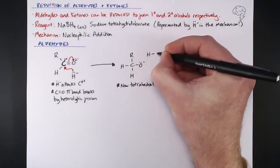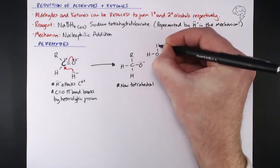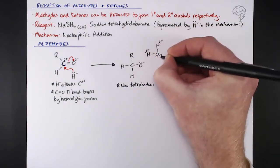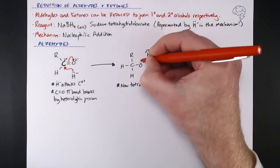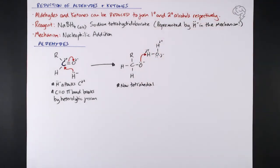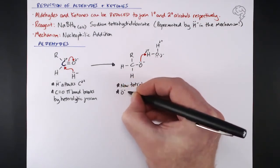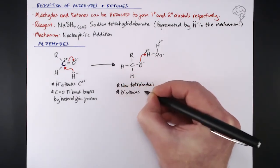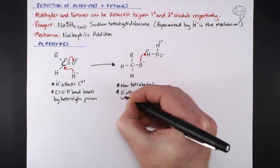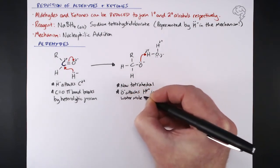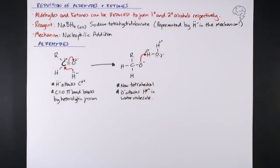The delta positive hydrogen from a water molecule is attracted to that fully negative oxygen in this intermediate. It's the lone pair on the oxygen that attacks the delta positive hydrogen on the water molecule - it's going to attract that water molecule over and bond to that hydrogen.